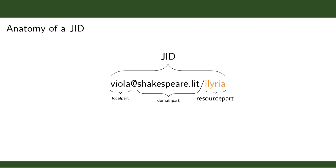The resource part refers to a specific client. In XMPP we might have a desktop client, a mobile phone, a tablet, and any number of other clients all connected at once, each individually addressable via the resource part. So viola@shakespeare.lit/illyria is a full JID. Full JIDs make individual clients globally and uniquely addressable, which is one of the special things about XMPP that makes it extremely flexible.